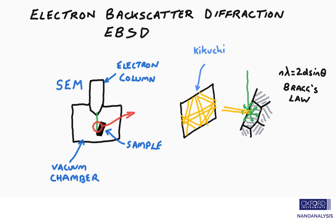As there are multiple lattice planes in the crystal lattice, there are in turn multiple Kikuchi bands, and these form the diffraction pattern, which is known as an EBSP, or an electron backscatter diffraction pattern.